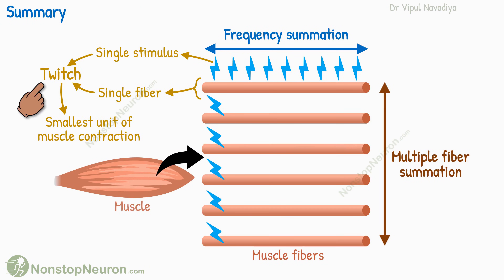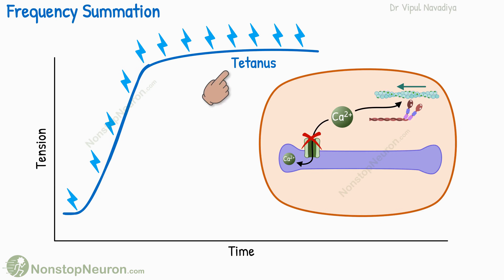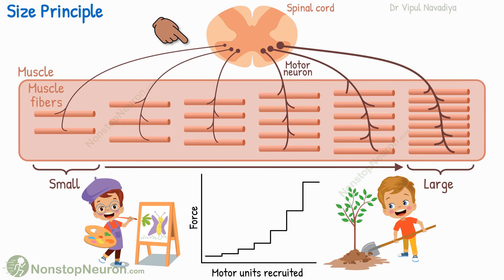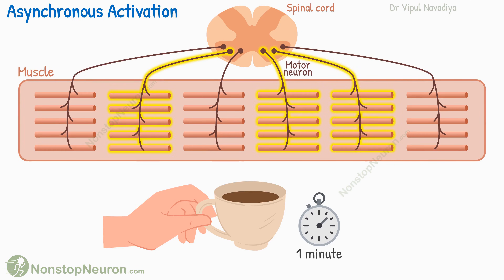Let's have a quick summary. Twitch is a contraction of a single muscle fiber by a single stimulus — it is the smallest unit of muscle contraction. Frequency summation is adding up multiple twitches of the same muscle fibers by stimulating them at a higher frequency. In frequency summation, tetanus is seen when individual twitches fuse together and are not distinguishable from one another. Multiple fiber summation is stimulating multiple fibers simultaneously. At weak stimulus, smaller motor units are activated, and with increasing strength of the stimulus, large motor units are recruited. Finally, different motor units are activated asynchronously.